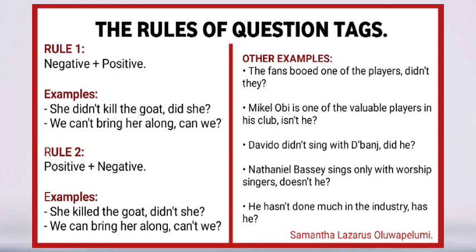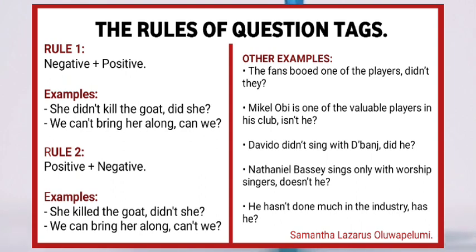The rules of question tags. Rule one: negative plus positive — the negative statement takes the positive tag. Example: 'She didn't kill the goats. Did she?' and 'We can't bring her home. Can we?' Rule two: positive plus negative — a positive statement takes a negative tag. Examples: 'She killed the goats. Didn't she?' and 'We can bring it along. Can't we?'